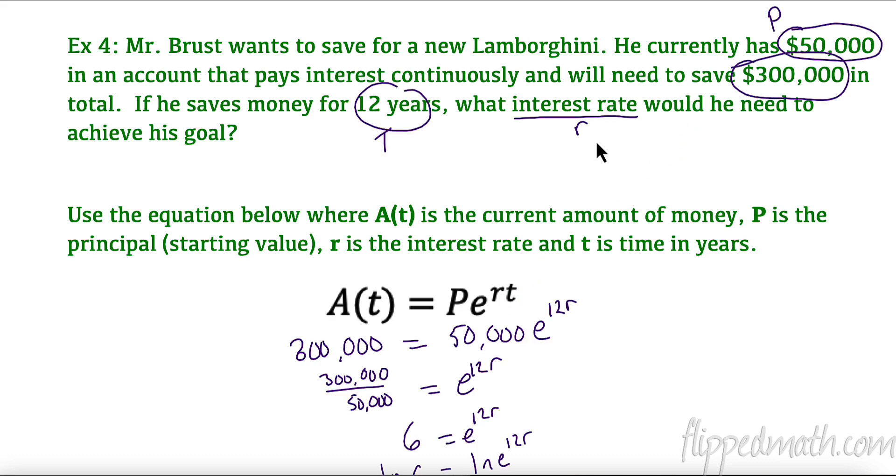Mr. Brust wants to save for a new Lamborghini. He currently has $50,000, that's called principal. Principal is what we start with when we're investing, in an account that pays interest continuously. That's why we're using the Pe^(rt) formula, that means continuously compounded. And he'll need to save $300,000 in total. Keep on dreaming Mr. Brust. If he saves money for 12 years, that's our time, our t value, what interest rate would he need to achieve his goal? How much does this rate need to be so that he can actually get to 300,000 just starting with 50,000 after 12 years?